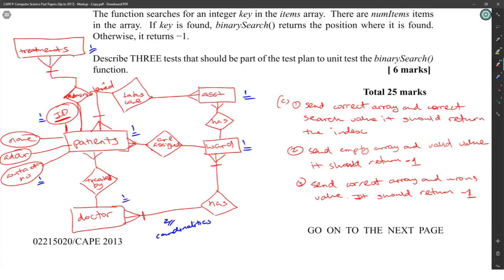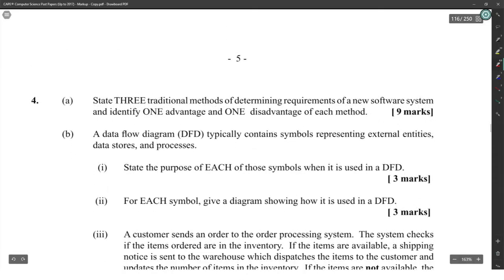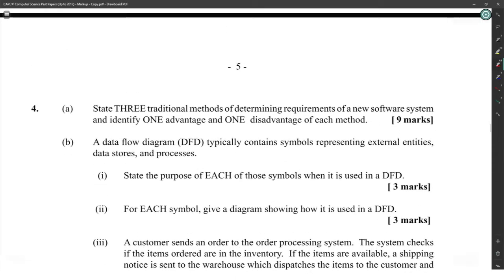State three traditional methods of determining requirements of a new software system. Identify one advantage and one disadvantage of each method. This is research.